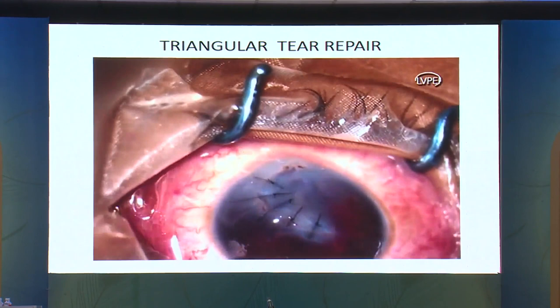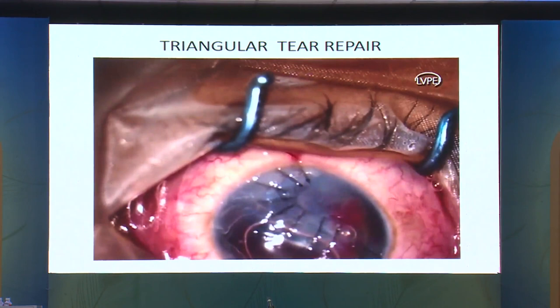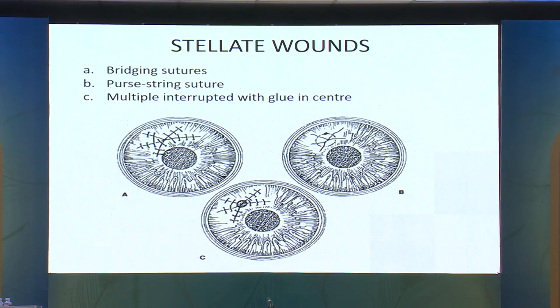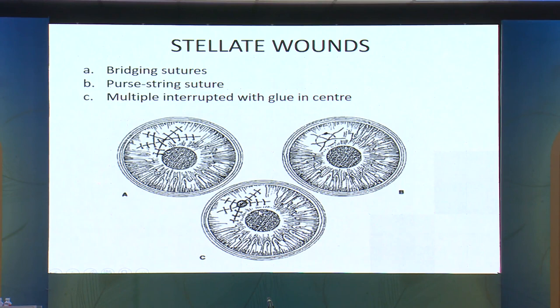For stellate wounds with tissue loss: bridging sutures and purse-string sutures may be required. A purse-string suture begins on one side, the needle is passed in a circular manner to complete the circle, and this often seals perforations in stellate wounds. If wound gaping persists after suturing, cyanoacrylate glue with a bandage contact lens is applied.